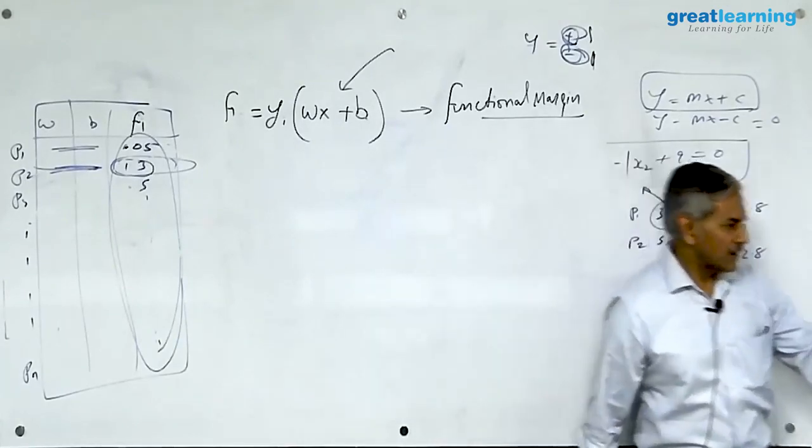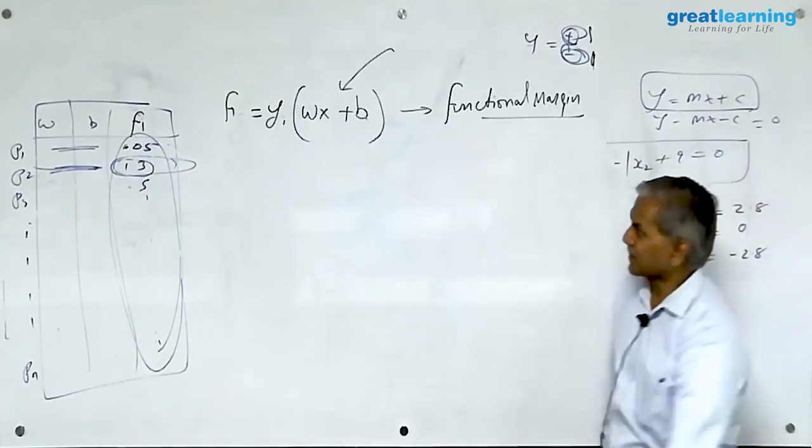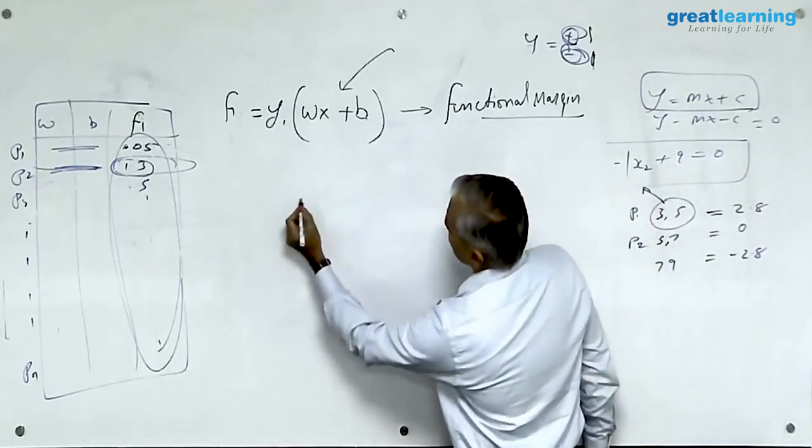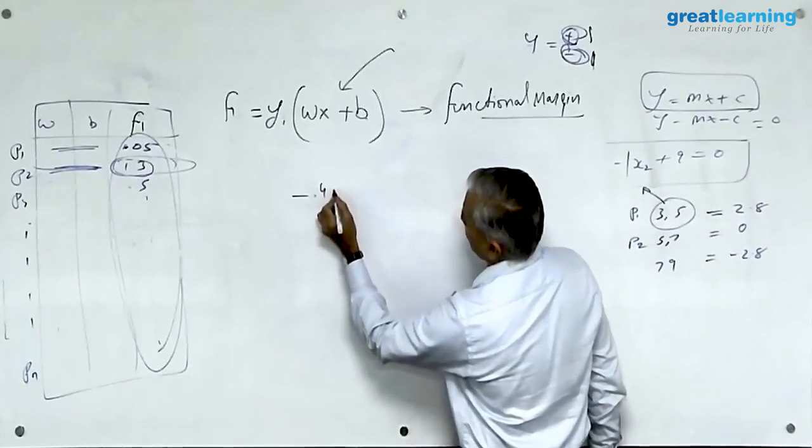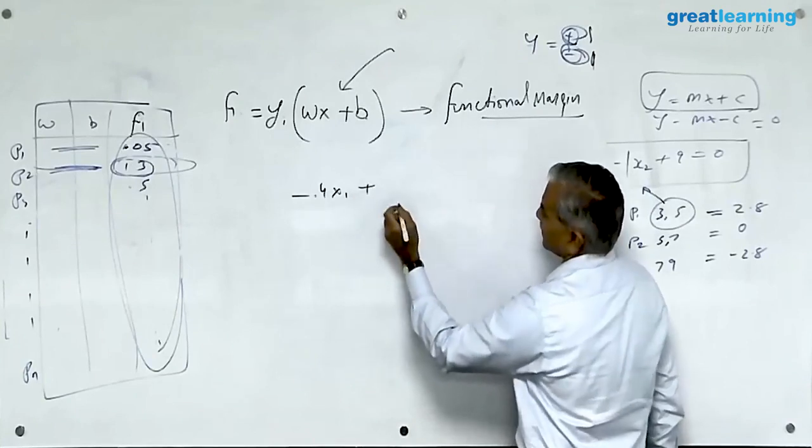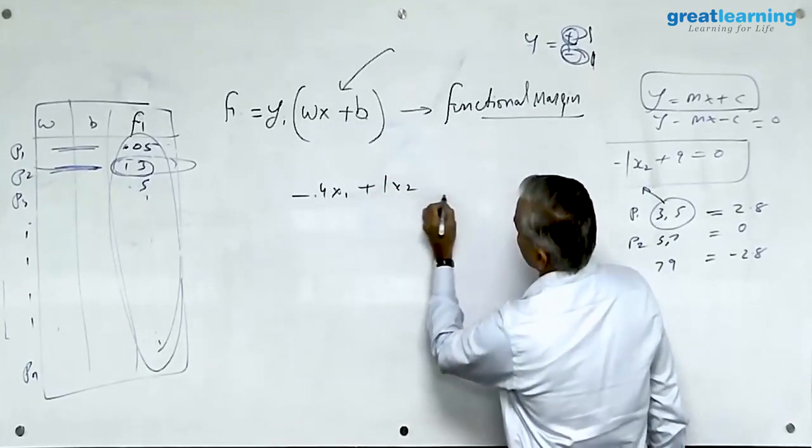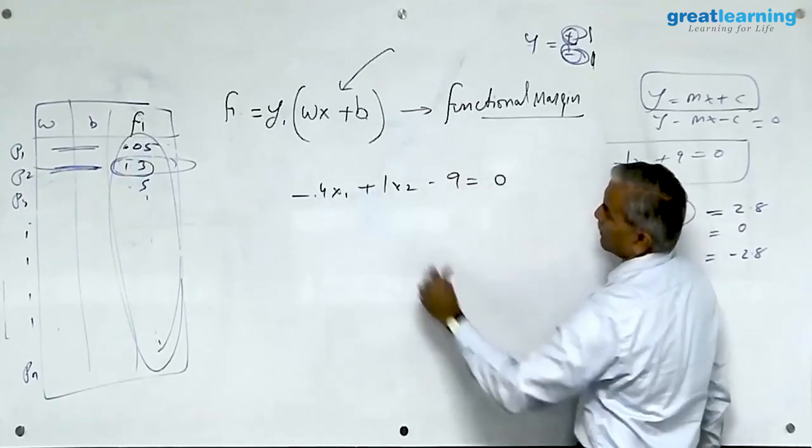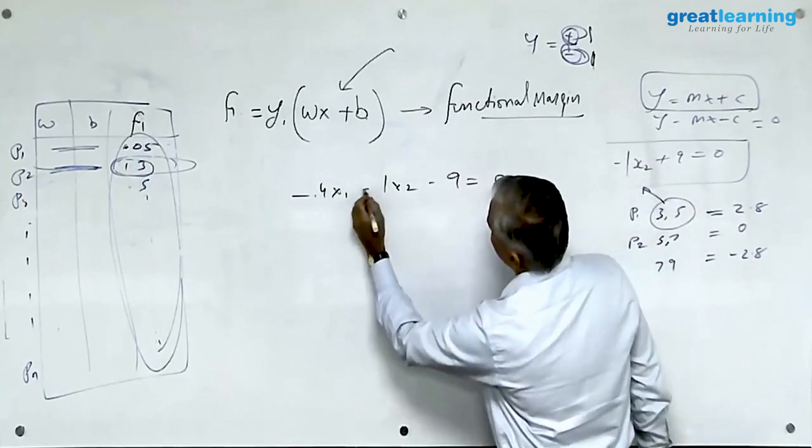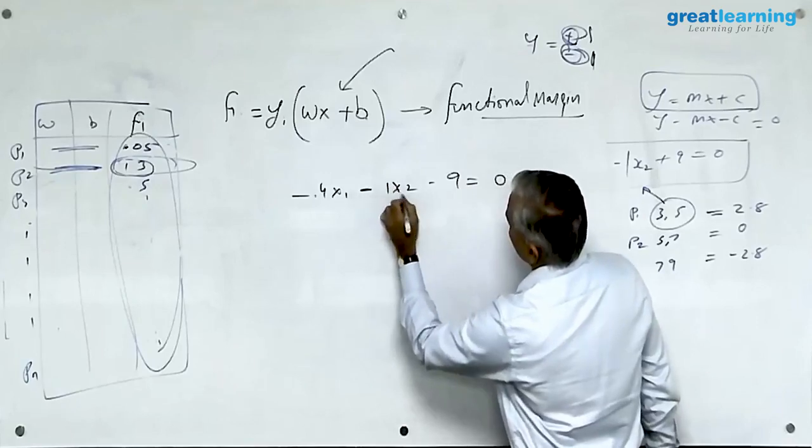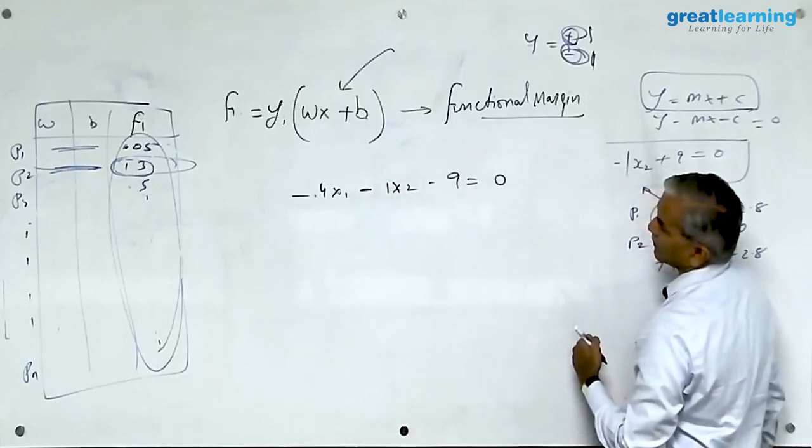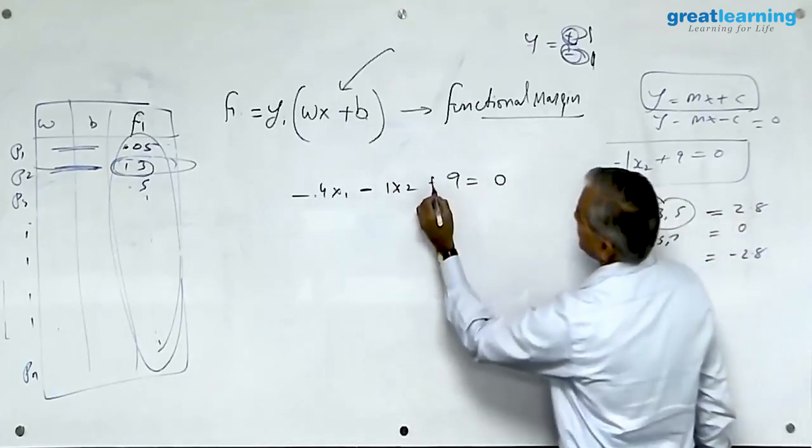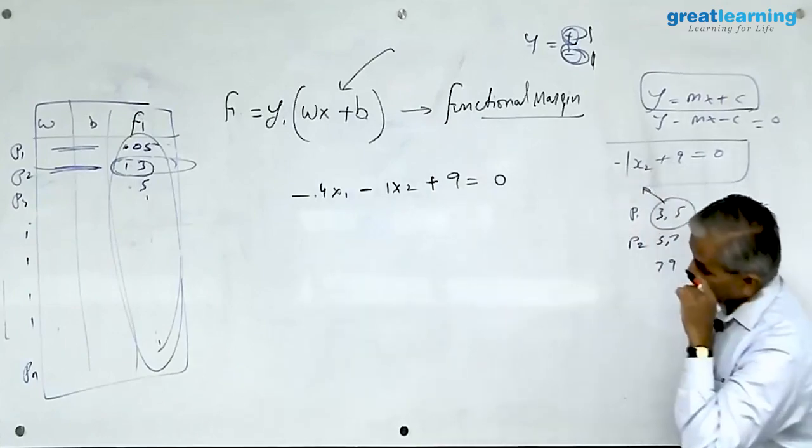This is going to be slightly slippery but have a look at this. We started with minus 0.4x1 plus x2 minus 9 equal to 0 right? This is what we started with.